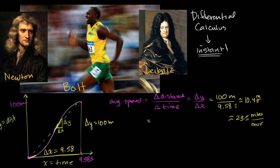So what you want to do — and we're going to go into depth and study this more rigorously — is you want to take the limit as delta x approaches zero, of your change in y over your change in x. And when you do that, you're going to approach that instantaneous rate of change — you could view it as the instantaneous slope at that point in the curve, or the slope of the tangent line at that point. In calculus terminology, we would view that as the derivative.